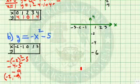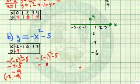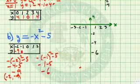Let's try another one. If x is -1, then I have -(-1)²-5. Negative (-1)² is 1, which gives me -6. So (-1,-6).